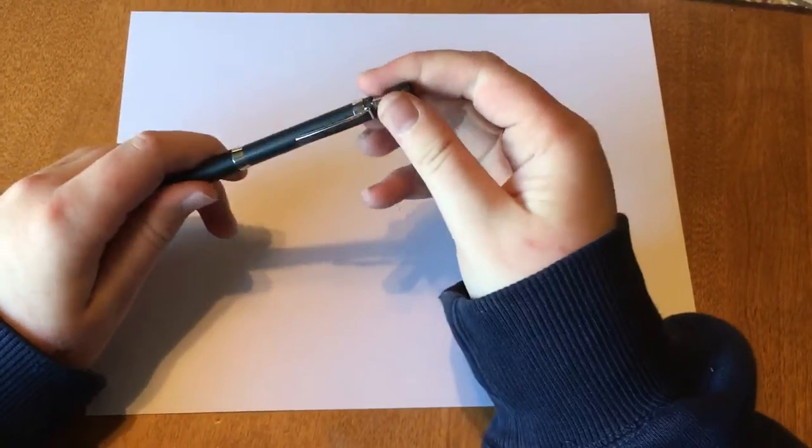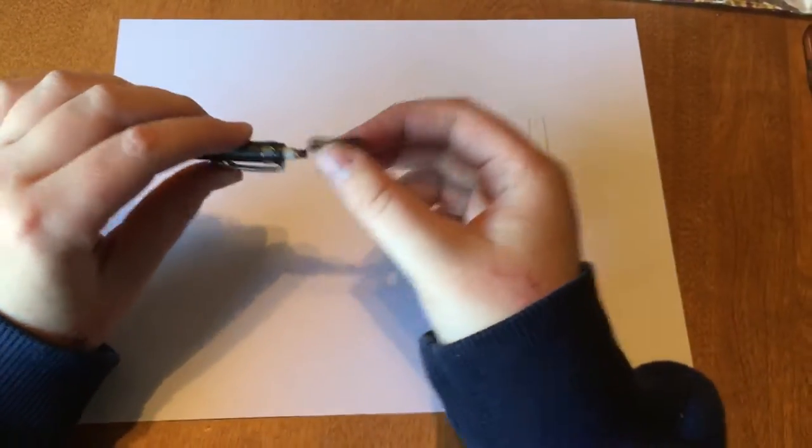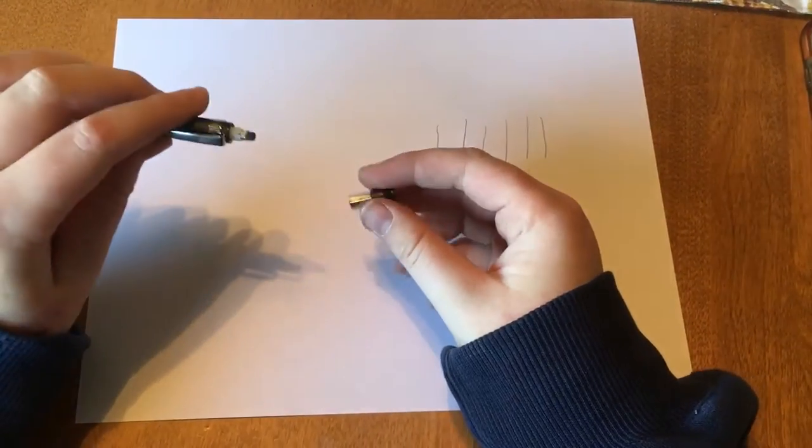And then to get to the eraser, you just pull this off from the end. And there's the mini eraser.